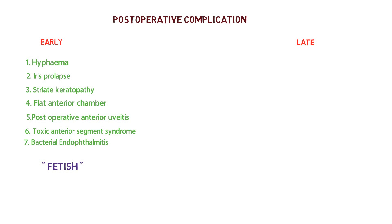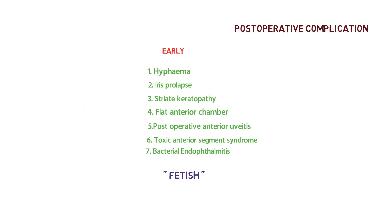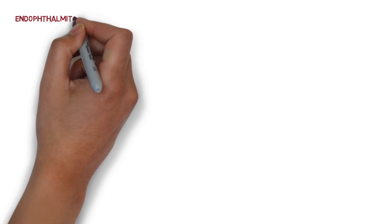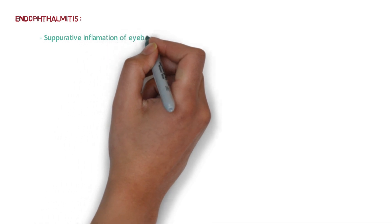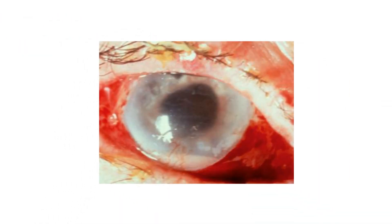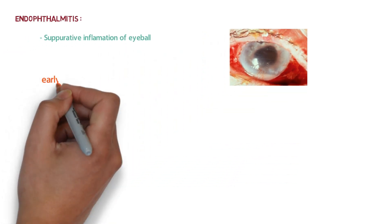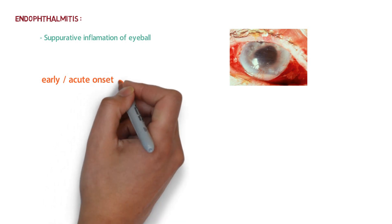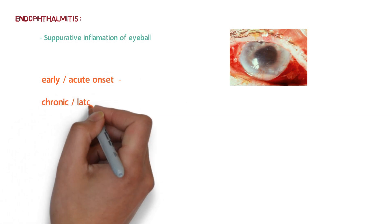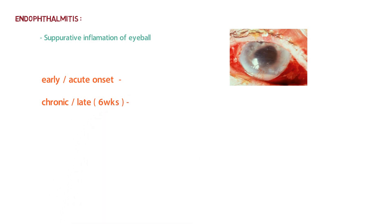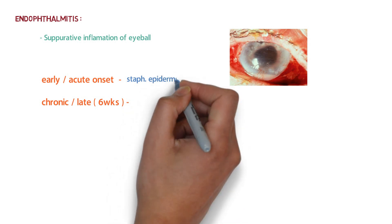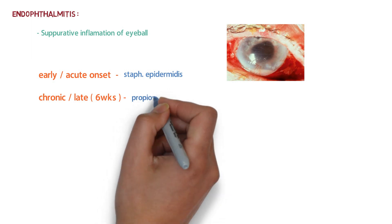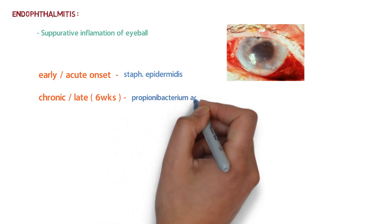Bacterial endophthalmitis is important for exams. It is a suppurative inflammation of the eyeball and can occur in acute (early) or chronic (late, around six weeks) onset. Early endophthalmitis is most commonly caused by Staphylococcus epidermidis, while chronic endophthalmitis is most commonly caused by Propionibacterium acnes.